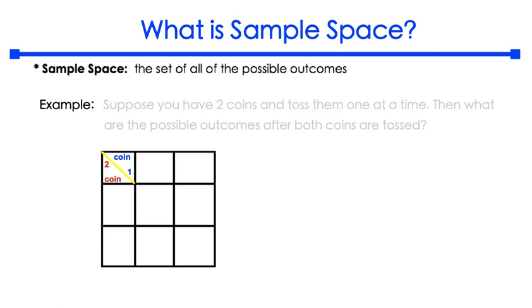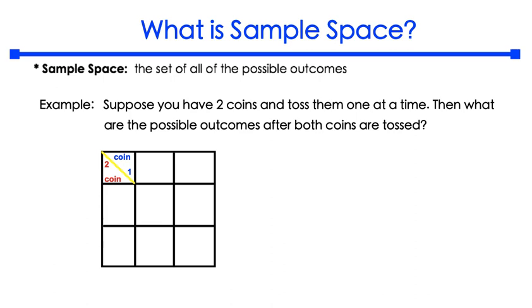So let's take a look at your example. Suppose you have two coins and you toss them one at a time. Then what are the possible outcomes after both coins are tossed?